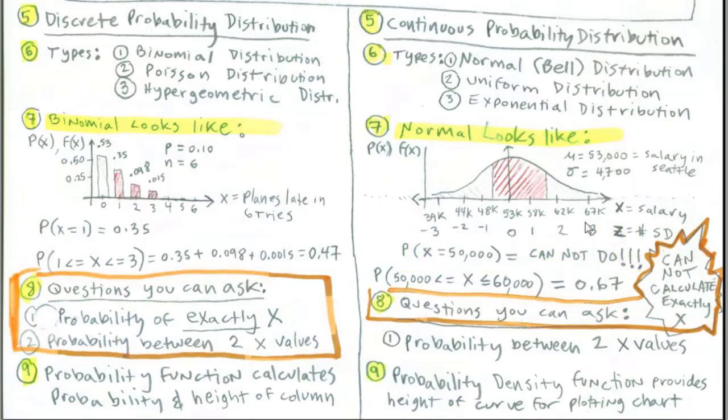This distribution we'll look at. This is salary for accounting positions in Seattle area. The average or mean for the population is $53,000. And then we'll talk in terms of x's and z's, which are standard deviations.